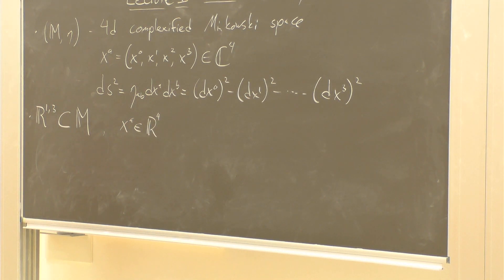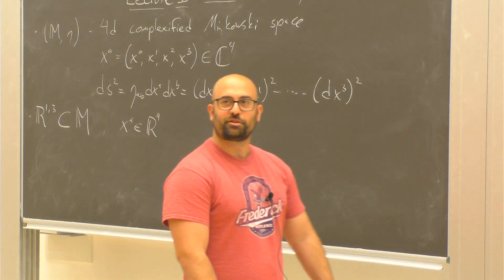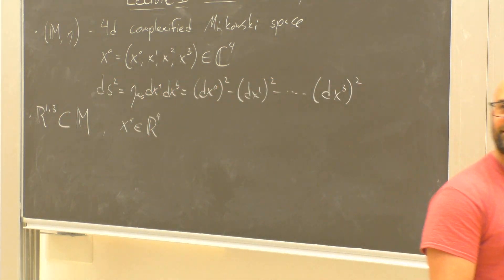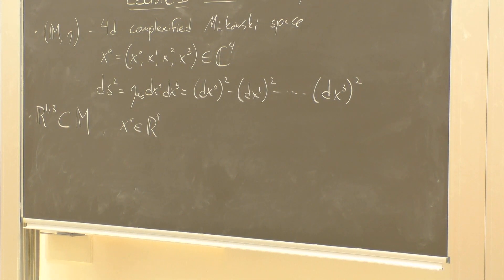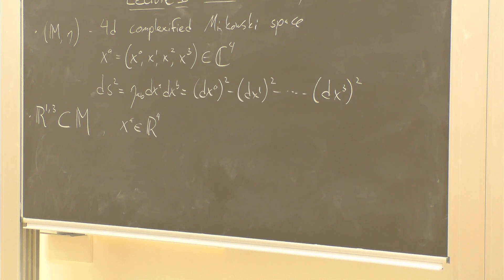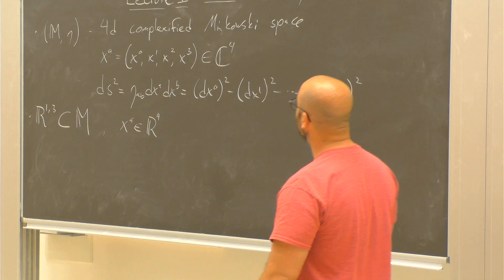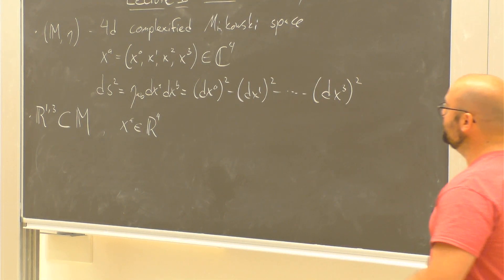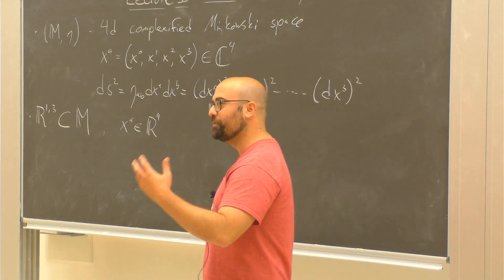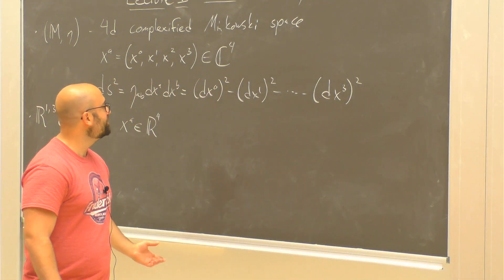One of the great morals of twister theory is that you should complexify everything. Do your calculations in this complex holomorphic setting. And then if you want Lorentzian real answers at the end of the day, it's somehow much easier to impose these reality conditions at the end of a calculation, at least in the formalism of twister theory, than it is to impose them ab initio. For almost everything I'll tell you, we'll be living in this complexified four-dimensional Minkowski space.